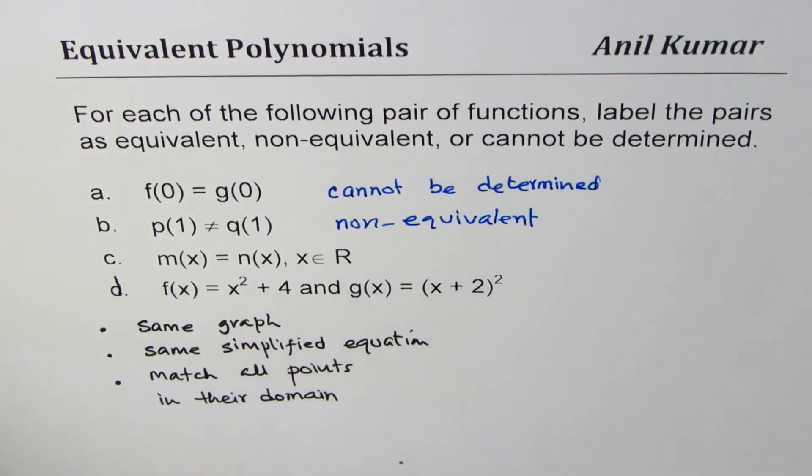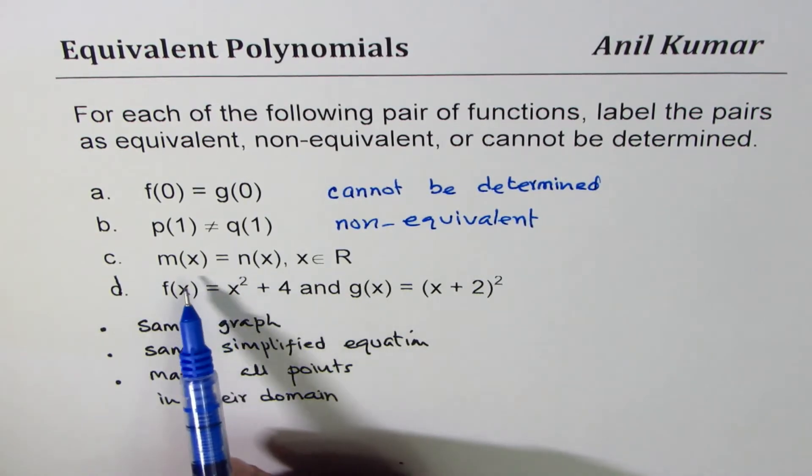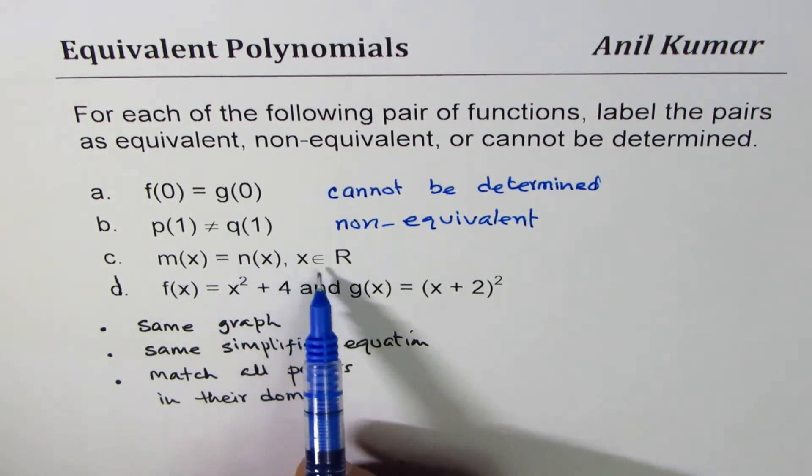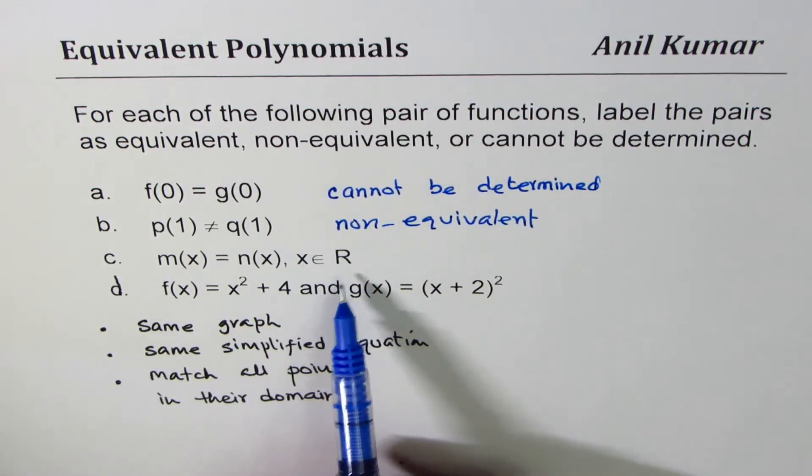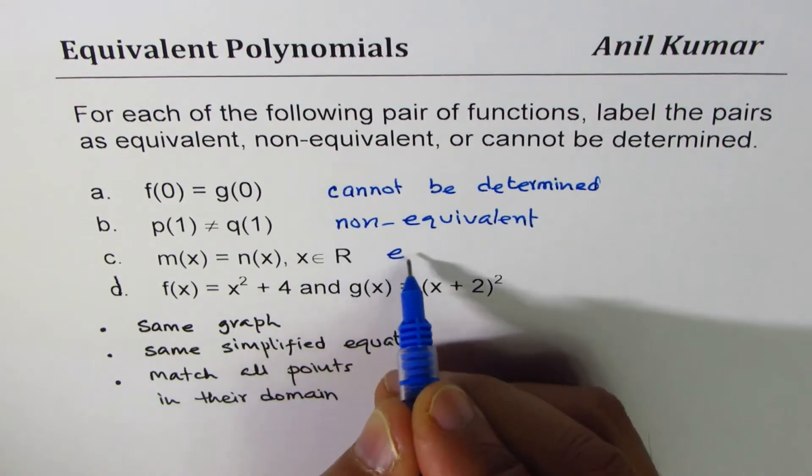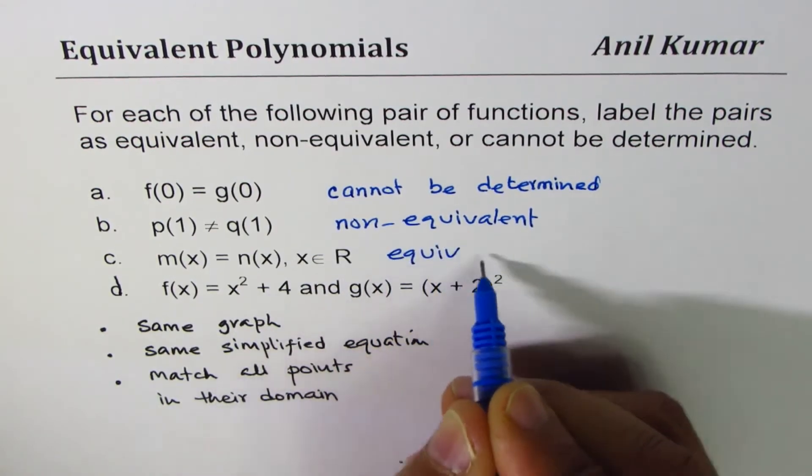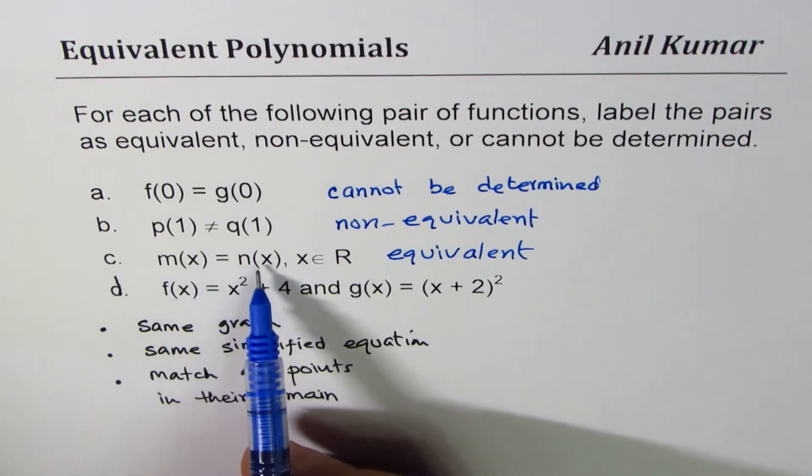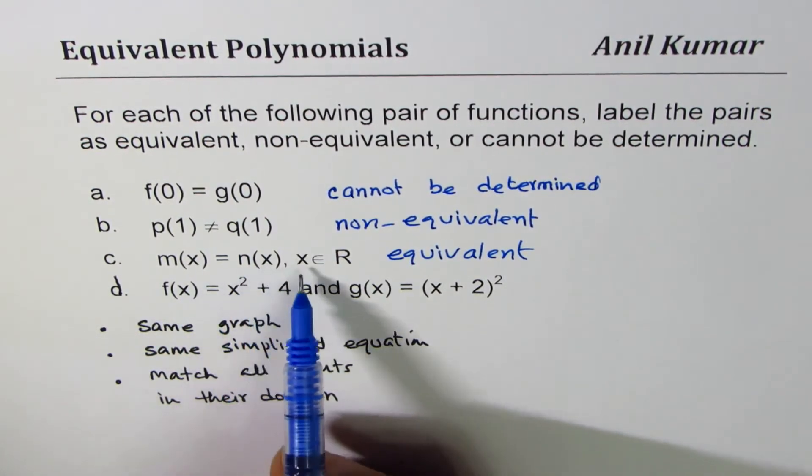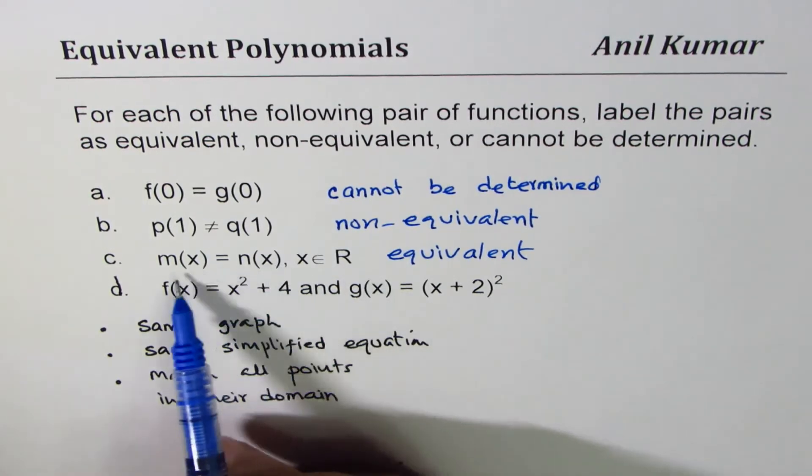So I hope you have understood what equivalent polynomials or what equivalent functions are. The next one is m(x) equals n(x) for all x belonging to real numbers. For polynomials they are defined for all real numbers, so that becomes the definition of equivalent polynomials. So these are always equivalent. Two polynomials are equivalent if in the domain of real numbers every point matches.